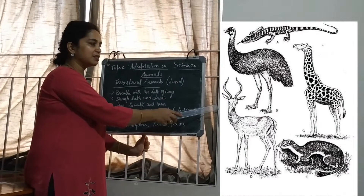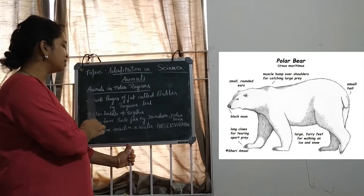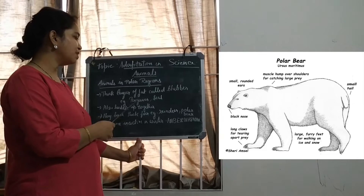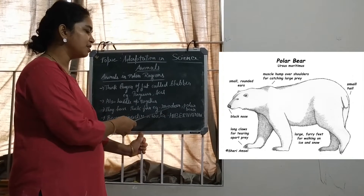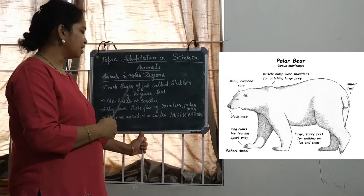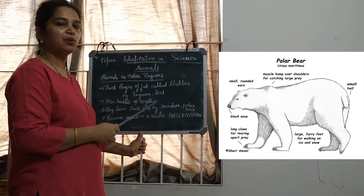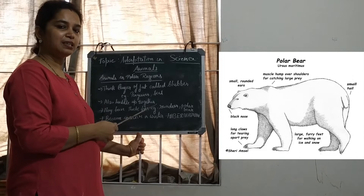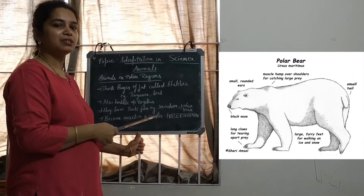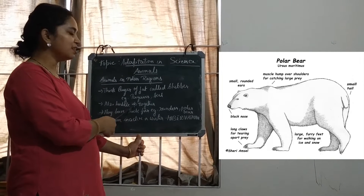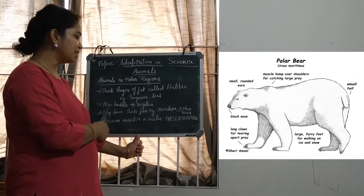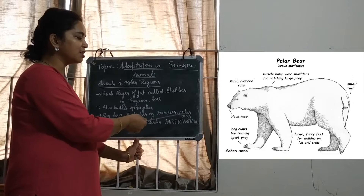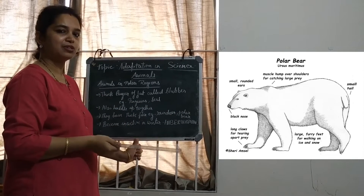You can see the terrestrial animals here. Now let's learn about animals found in the polar region. Polar regions are generally cold and covered with snow. The animals found there are penguins, seal, reindeer, and polar bear. They have a thick layer of fat inside the skin called blubbers, found in penguins and seals. Seals also have a streamlined body and hind limbs modified into flippers so that they can swim in water. Penguins generally huddle together to escape the extreme cold. They have thick fur on the body to escape the severe cold. Reindeer and polar bears also have thick fur to escape the cold.